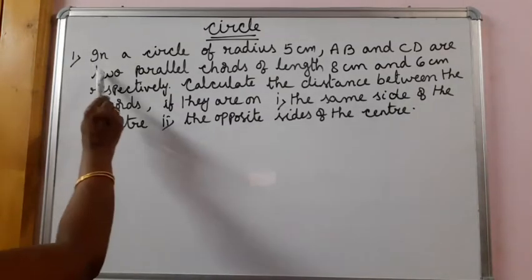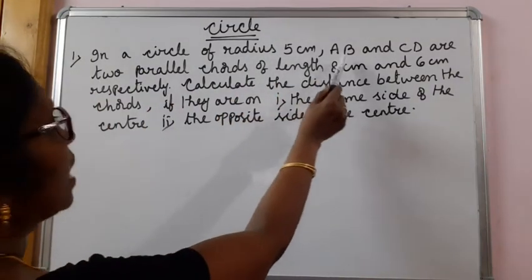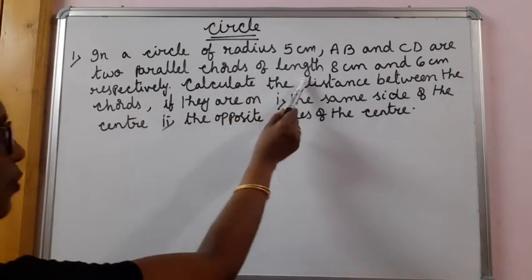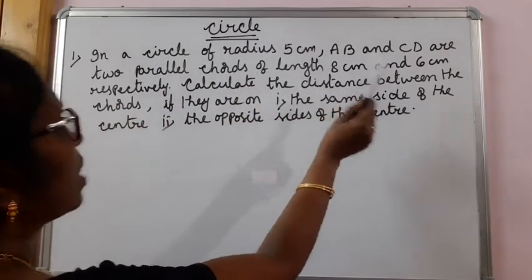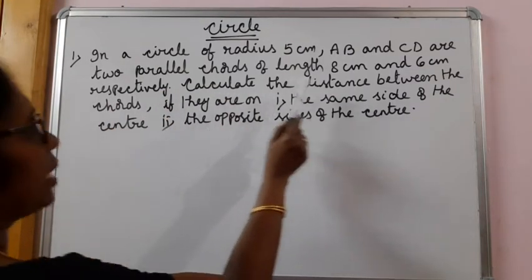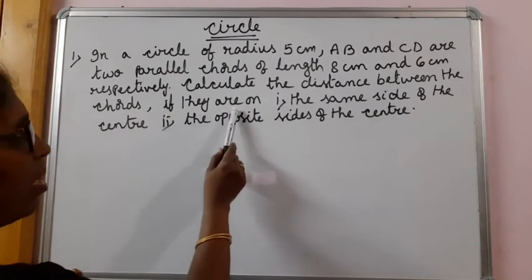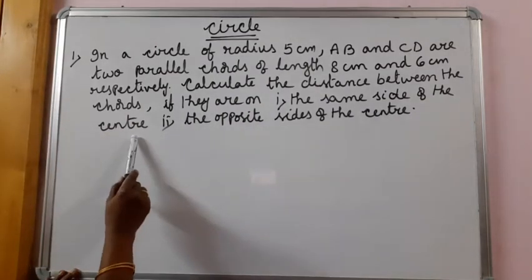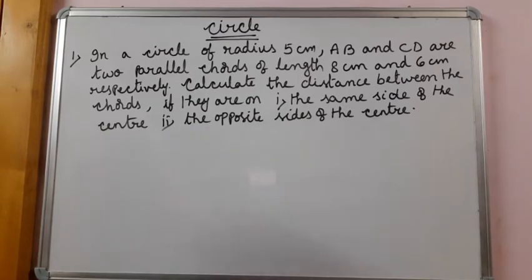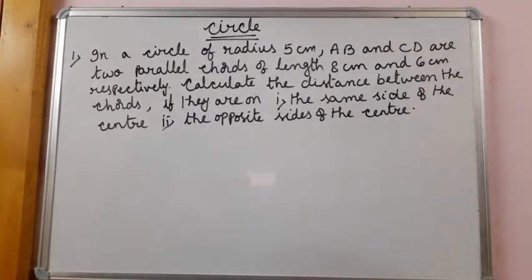The problem is: in a circle of radius 5 cm, AB and CD are two parallel chords of length 8 cm and 6 cm respectively. Calculate the distance between the chords if they are on the same side of the center, and second, if they are on the opposite sides of the center.